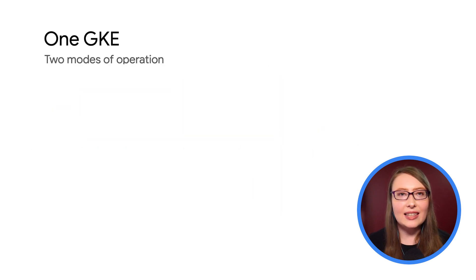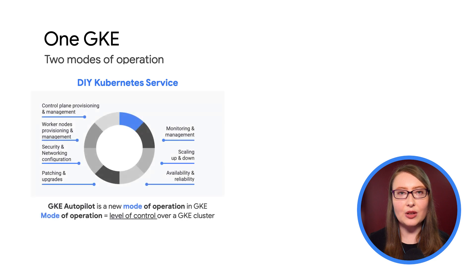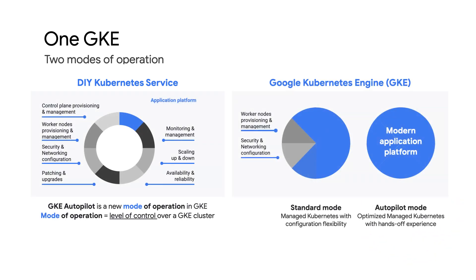GKE Autopilot Mode takes this idea of reducing the time and effort you have to spend on cluster optimization to the next level. GKE Autopilot Mode is our most fully managed version of Google Kubernetes Engine, and both the worker nodes and Kubernetes control plane are managed for you by Google. You just tell your GKE Autopilot Mode cluster what workload you want to run, with its resource requests and limits set, and GKE Autopilot Mode sorts out the underlying infrastructure for you.